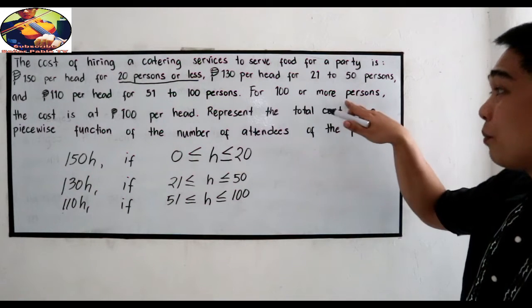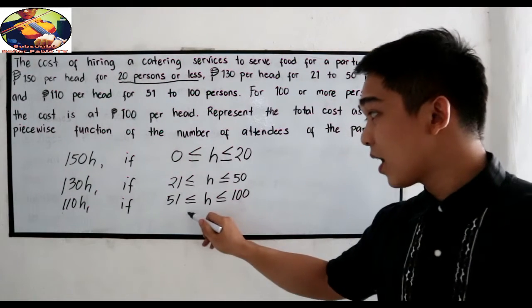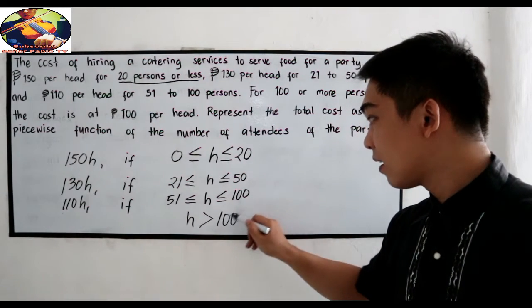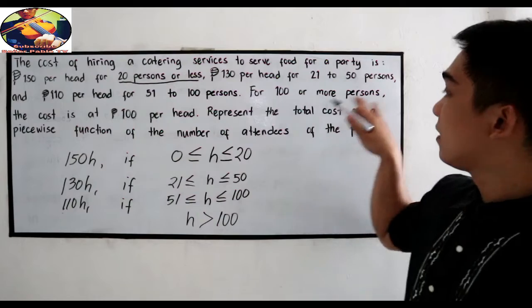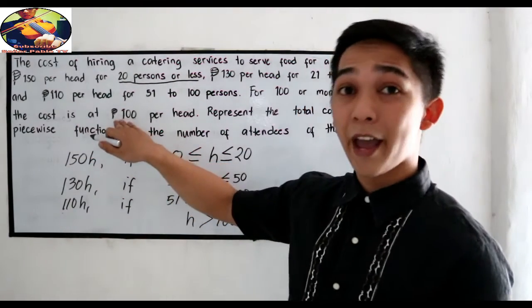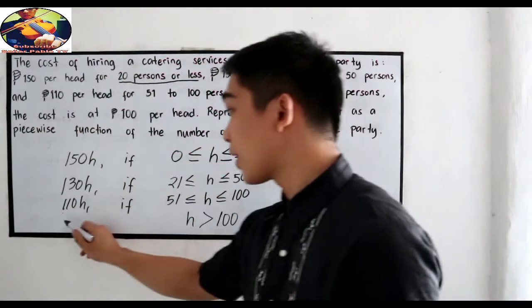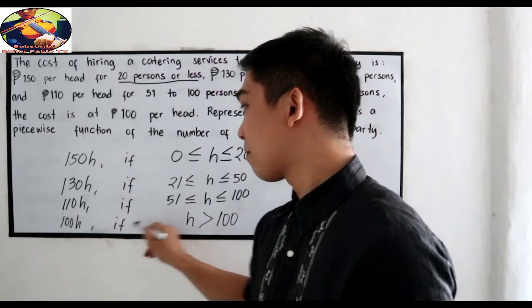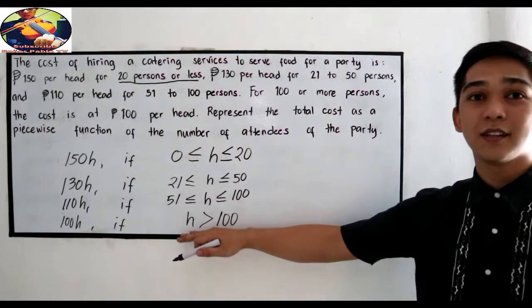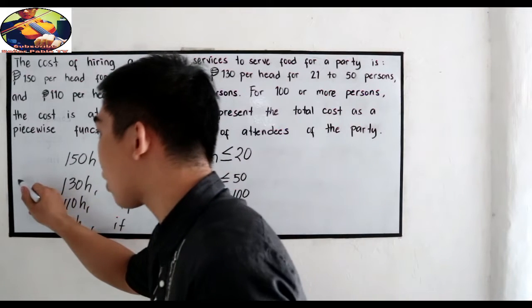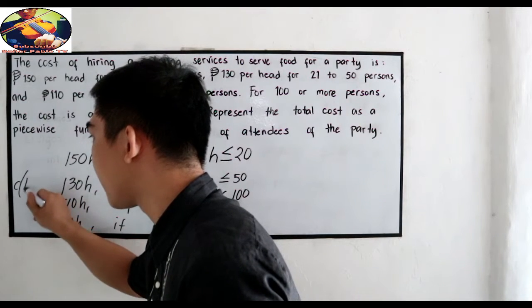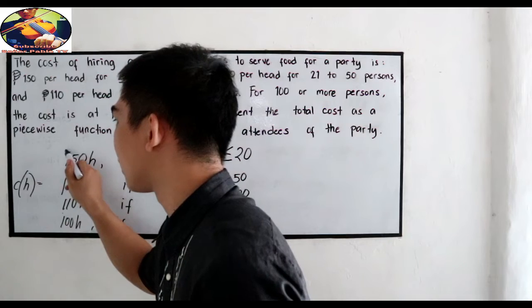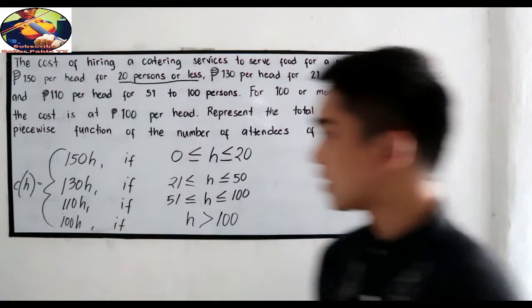For 100 or more persons — kapag ang participants natin ay mas malaki sa 100 — ang babayaran ay 100 pesos per head. So ang cost ay 100h. Ito ngayon yung ating cost per head ng ating piecewise function.